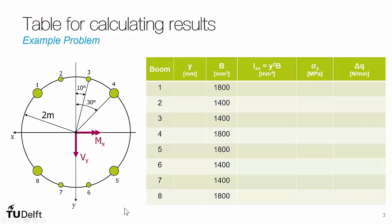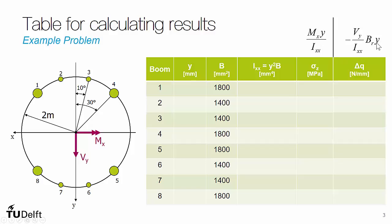That table has all our boom areas given in the problem for each boom number. We can fill in ixx for each boom, calculate sigma z, and calculate delta q. We also need the y-coordinate for each boom, since sigma z equals mx·y / ixx and delta q equals negative vy / ixx times the boom area times y. We need to be careful here because mx is a negative moment, which will result in a negative number in that equation.